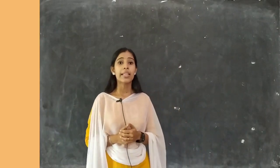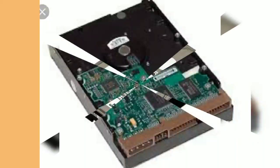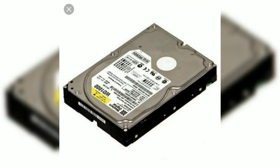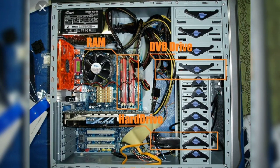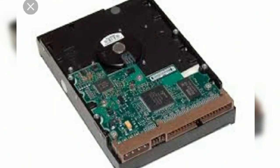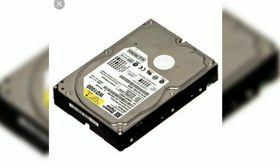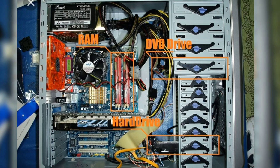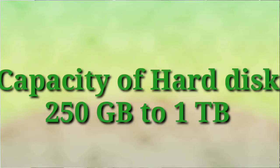Now we are going to discuss about the secondary storage devices. The first one is hard disk, also known as hard drive. It is enclosed within the CPU box. All the software and saved data being used in a computer system is saved inside the hard disk.